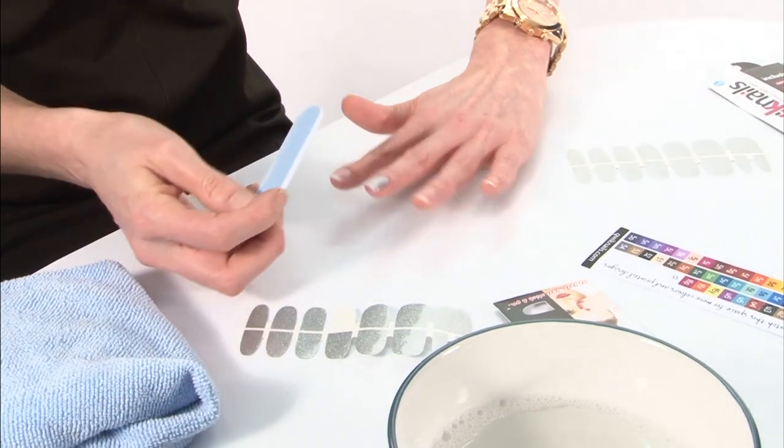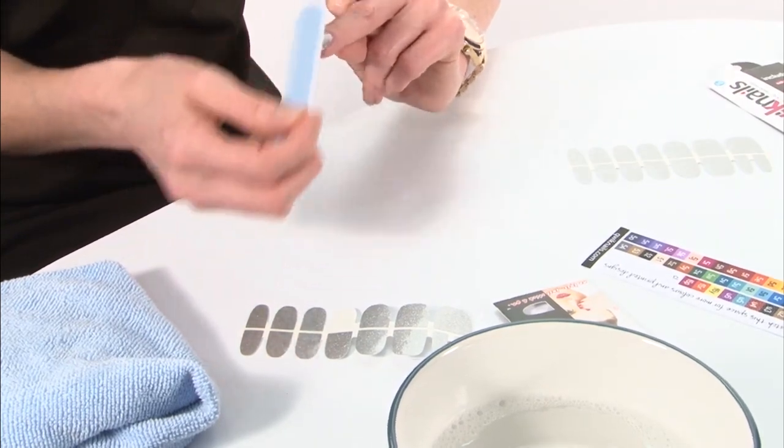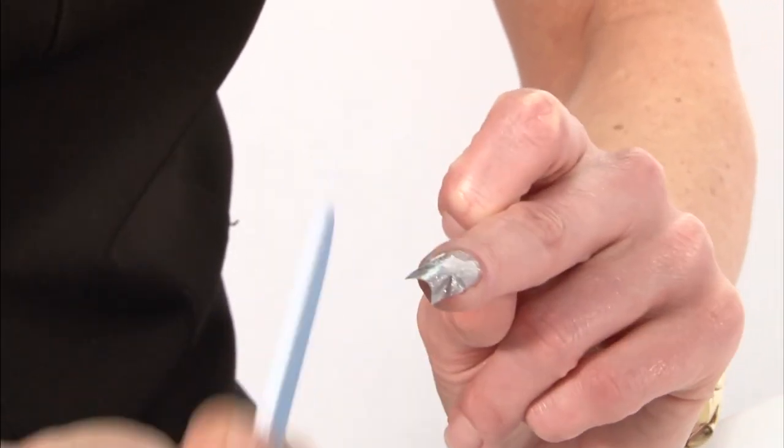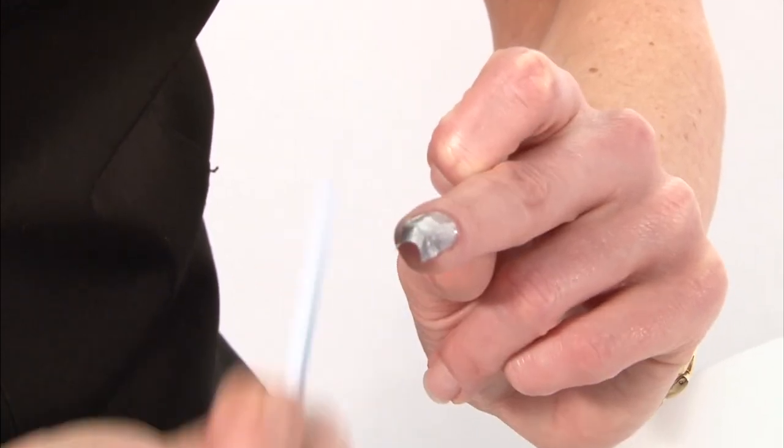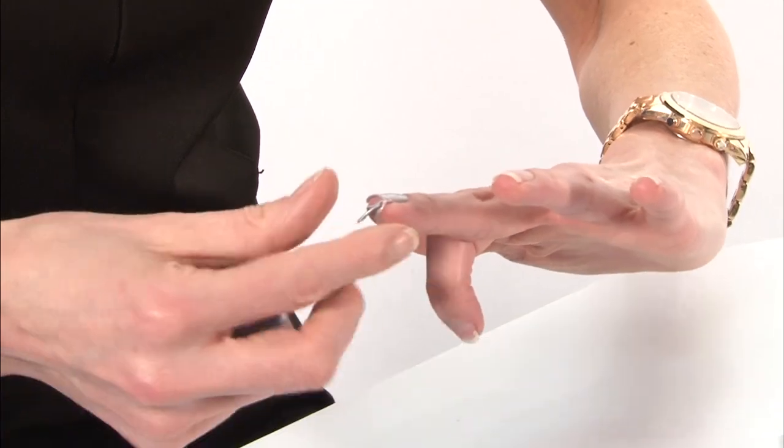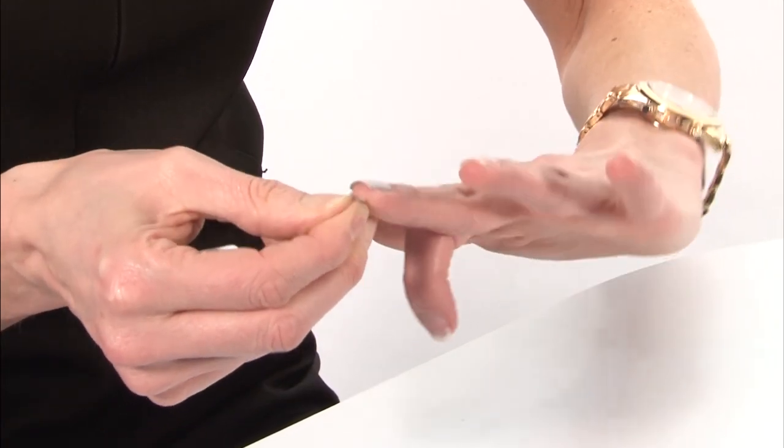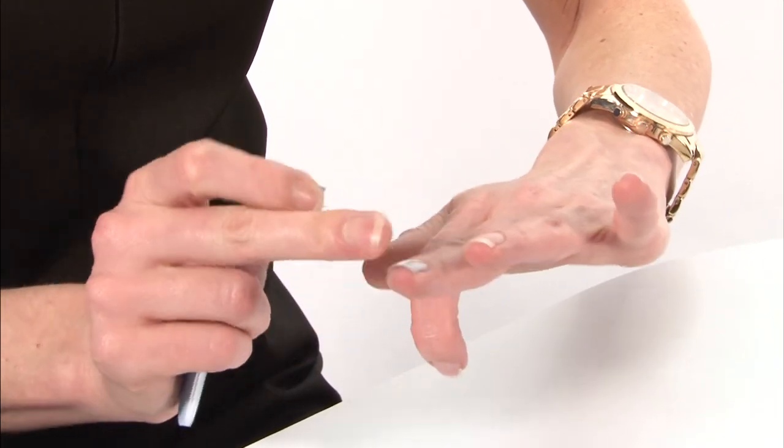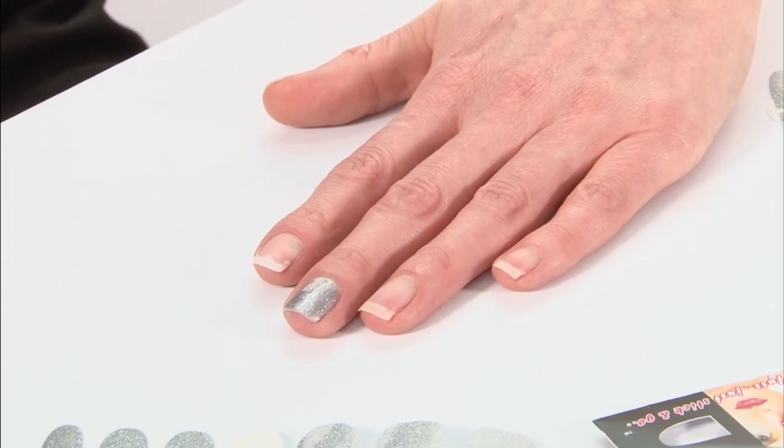Pick up your buffer and gently buff the end of the nail to remove the excess wrap. Once you've finished, the wrap will come away from the end of the nail. Gently pull to remove any excess and you have a complete nail.